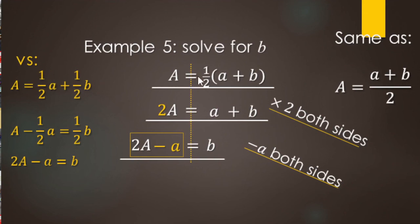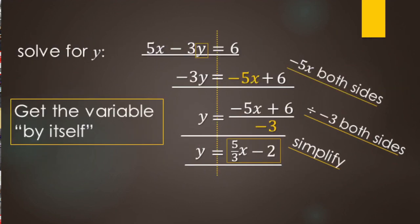You could also solve it by distributing the one-half first: one-half times A and one-half times B. Then subtract one-half A from both sides and multiply by 2 to undo the one-half, giving 2A for the A term and 1B. Either path works. To summarize: when solving formulas or literal equations, identify the target variable and undo everything being done to it to get it alone on one side of the equal sign.